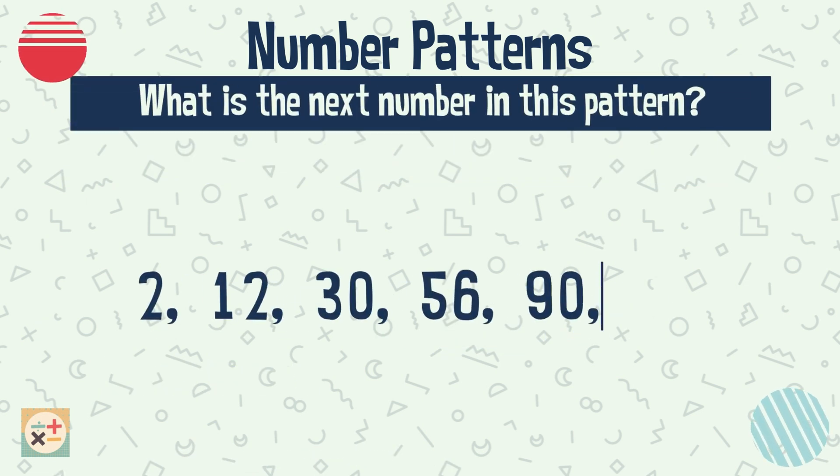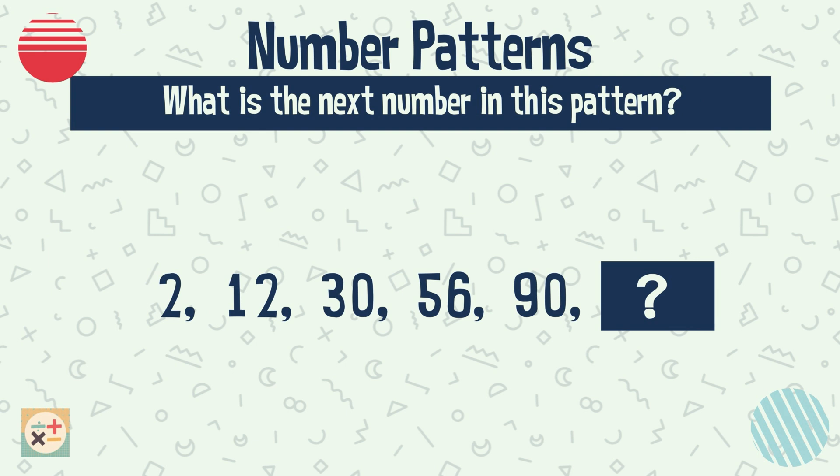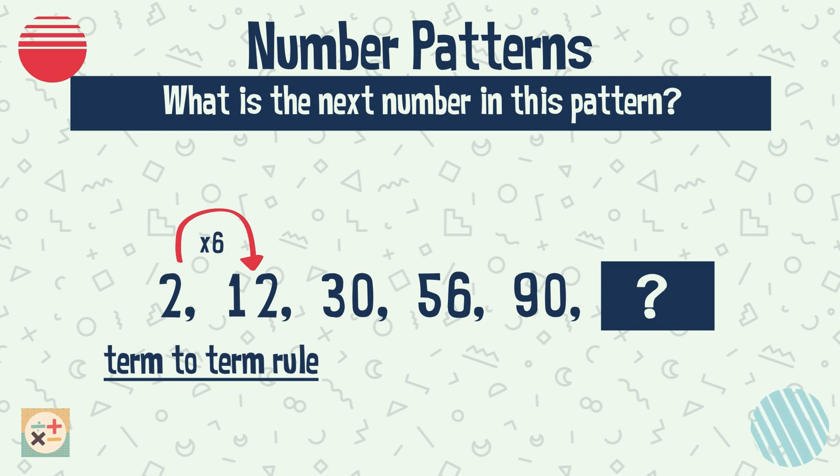This last number sequence is slightly trickier. At first glance, there is no obvious pattern. If we look at the differences between the first two terms, 2 and 12, we can either multiply by 6 or add 10.